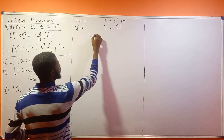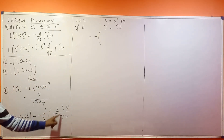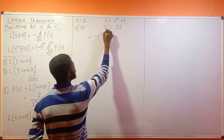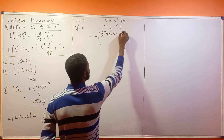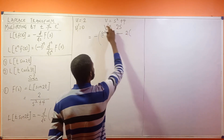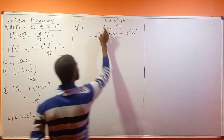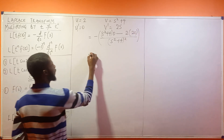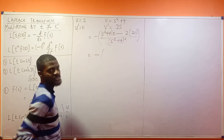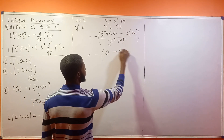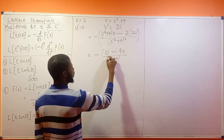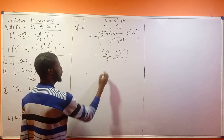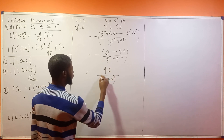So this becomes minus — let us differentiate with respect to s. In the quotient rule, v comes first: s squared plus 4 times u prime which is 0, minus 2 times v prime which is 2s, divided by v squared, which is (s squared plus 4) squared. This simplifies: 0 minus 4s gives minus 4s, and minus times minus gives us 4s divided by (s squared plus 4) squared.